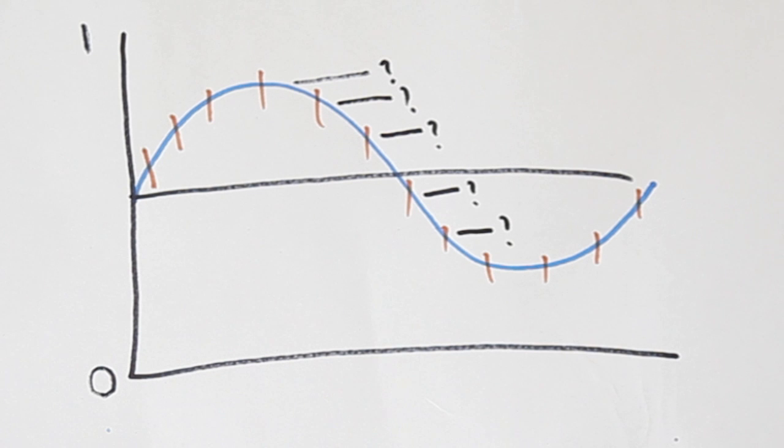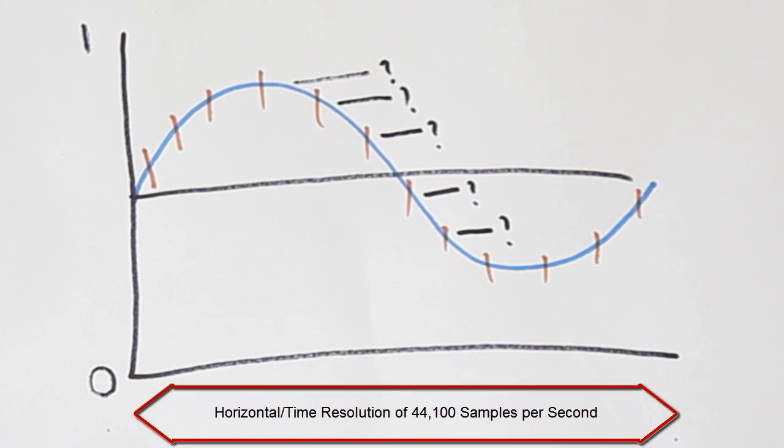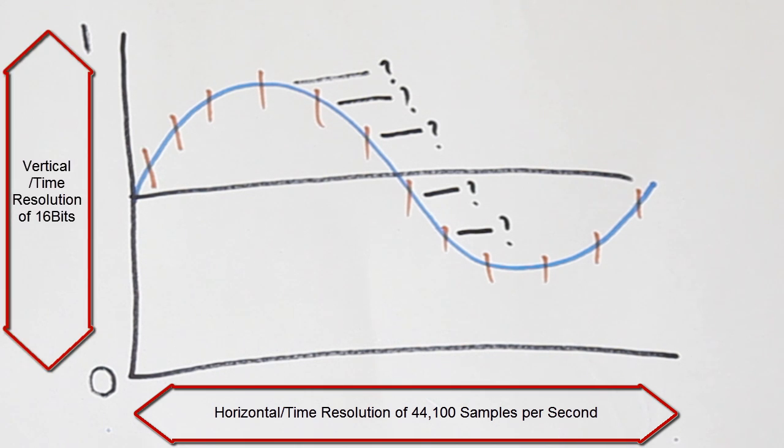In case you don't fully understand this yet, I'm going to go back to an analogy I used in the preparing for mastering video. With 44.1kHz 16 bit audio, we have a time resolution, 44.1kHz, and an amplitude resolution of 65,536 values.